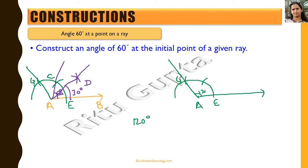If we want to construct 90 degrees at point A, we use the fact that we already have 60 degrees and 120 degrees. We draw an angle bisector between 60 and 120 degrees: from point C we draw an arc, and from point G we draw another arc. Their intersection point, let's name it X. Joining A and X gives 90 degrees.